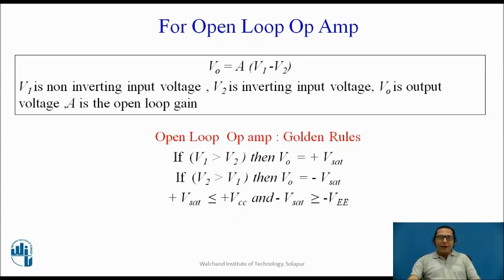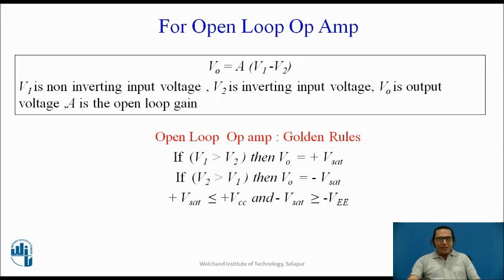For an open-loop op-amp, let us remember the golden rules. From the equation V0 = A × (V1 − V2), we can derive two golden rules. If V1 is greater than V2, meaning the non-inverting input voltage is even slightly greater than the inverting voltage, then the output V0 is plus saturation voltage, or +Vsat. Similarly, if the inverting input voltage is even slightly greater than the non-inverting input voltage, then the output is equal to −Vsat. Plus Vsat is usually less than or equal to +Vcc, and −Vsat is usually greater than or equal to −Vee, which are the positive and negative supply voltages of the op-amp.